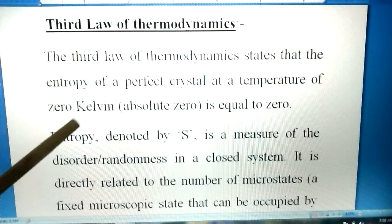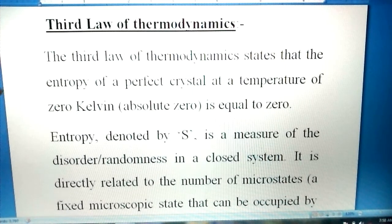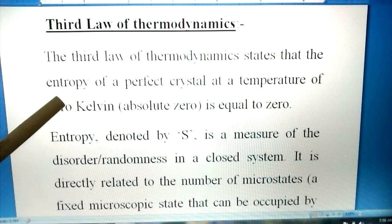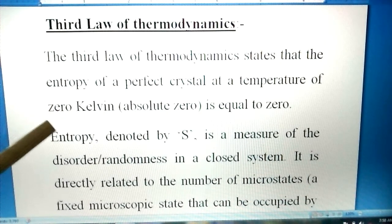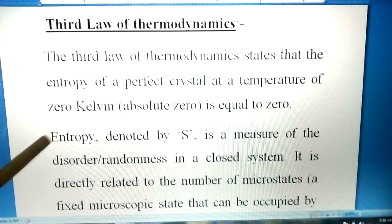First, we need to know what is entropy. Entropy is basically the randomness—the degree of randomness—that means the movement of the particles that are moving in different directions at a particular temperature.